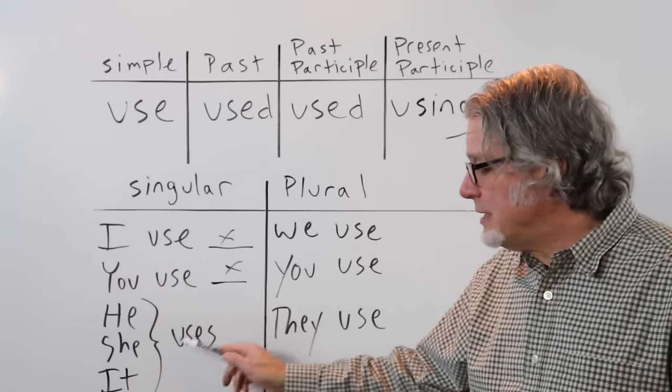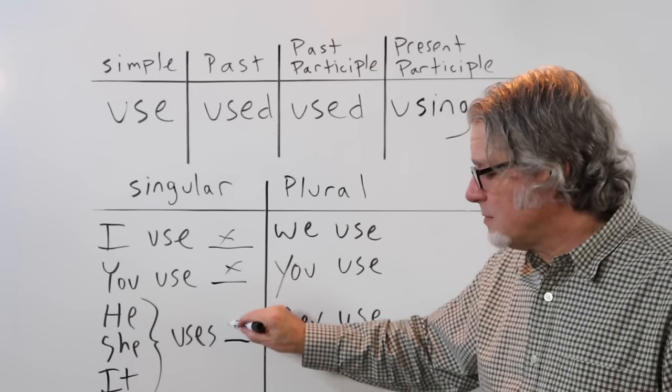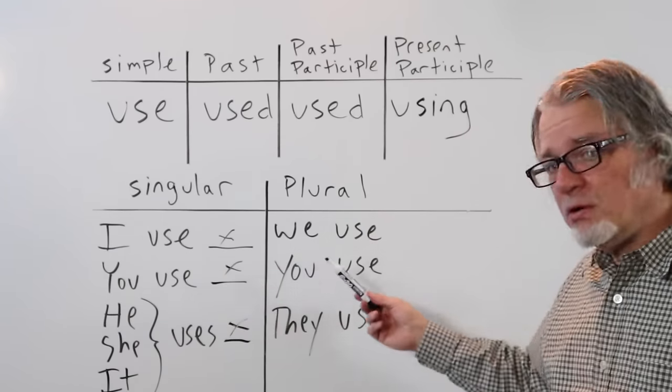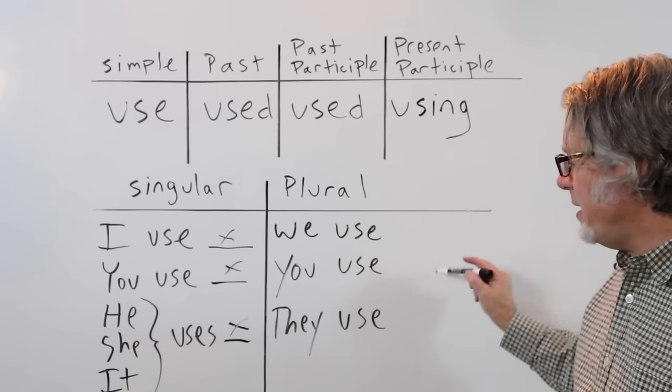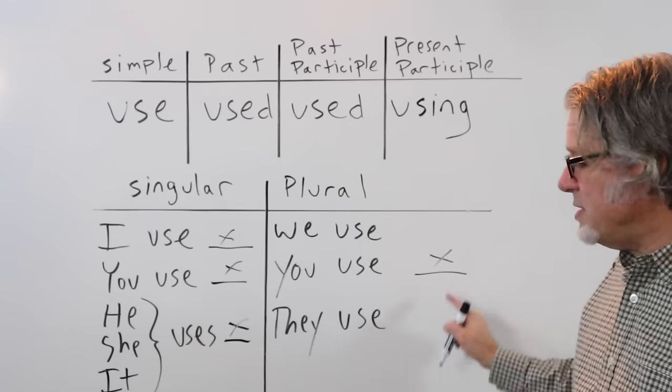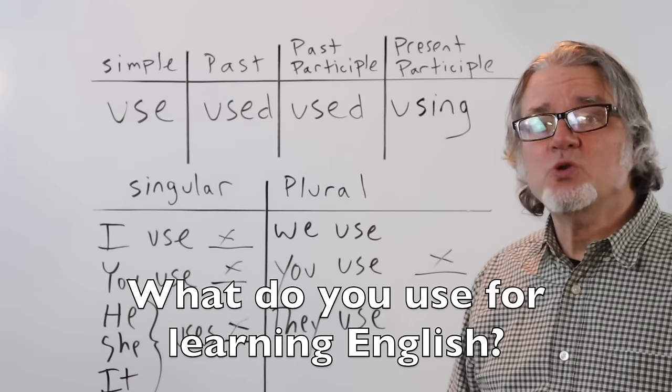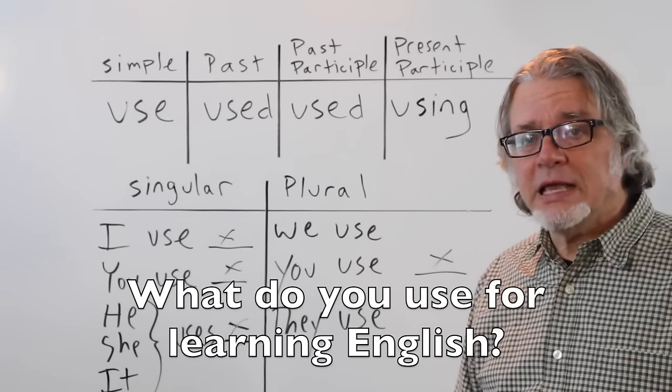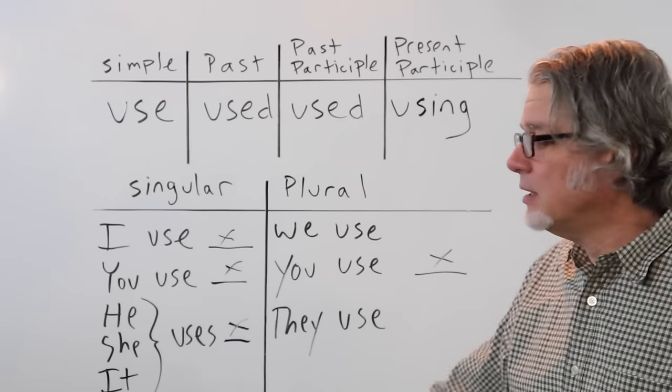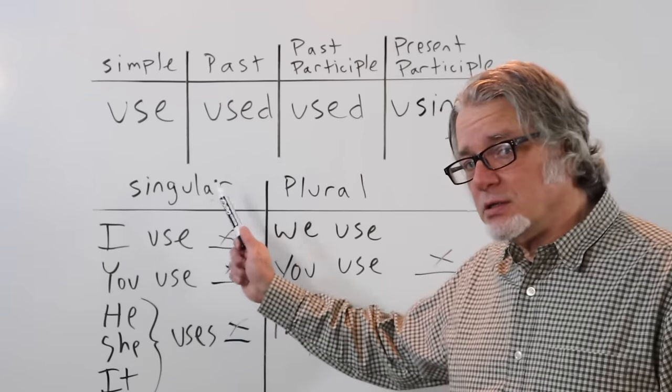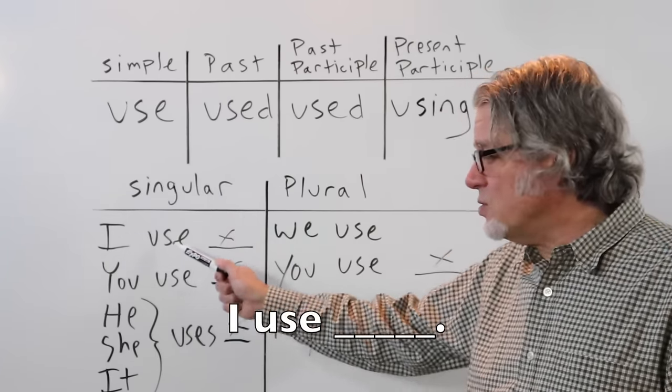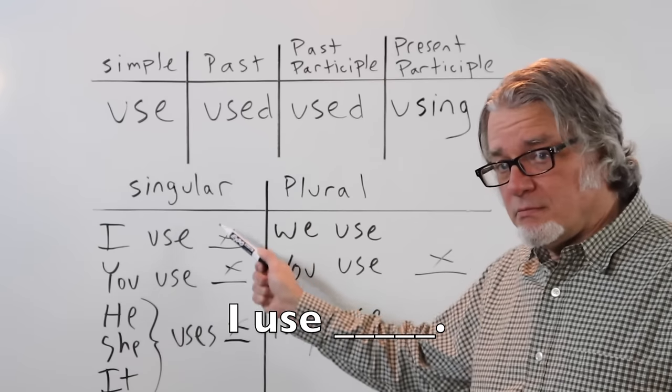He, she, it uses. And for the plural, we, you, they. And then there's going to be an object after use. What do you use for learning English? Your answer, I use, and then the thing.